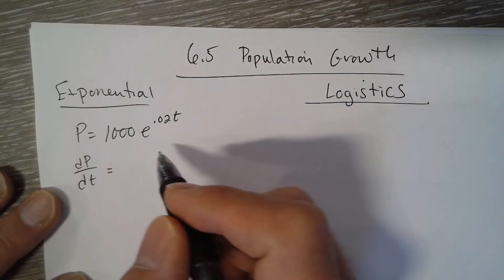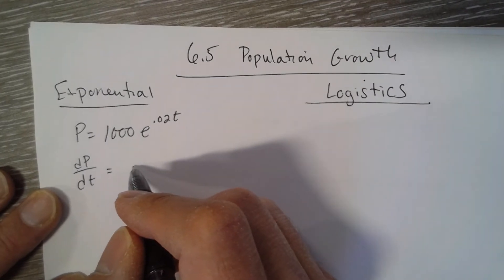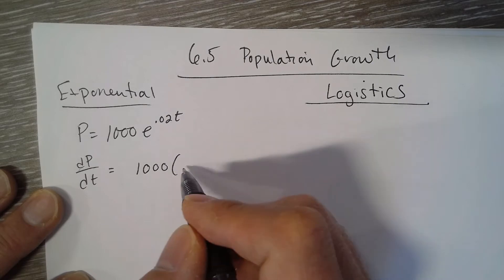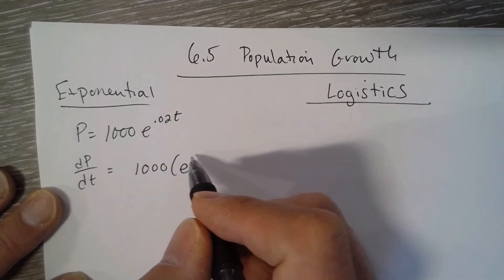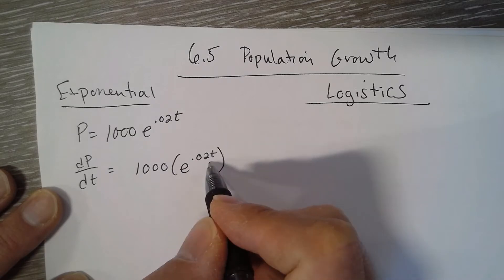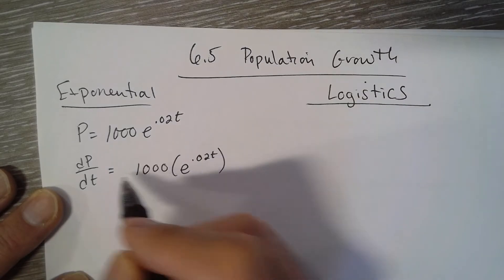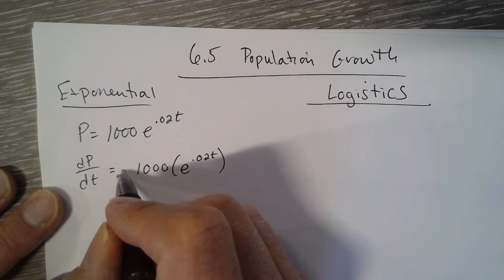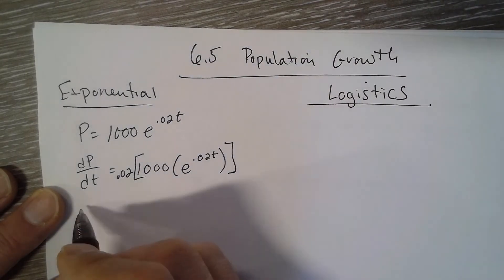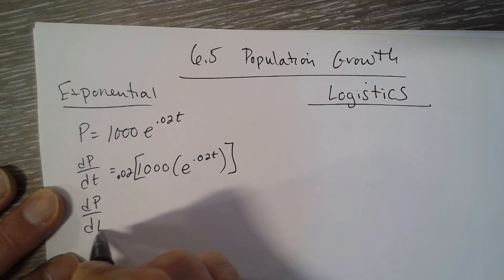You'd find dP/dt, and it's the same thing: 1000 times e to the u is just itself times the derivative of the exponent, which is 0.02. So it turns out to be dP/dt equals 0.02 times all of that, which is P.